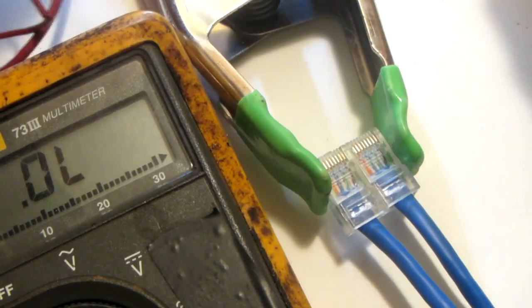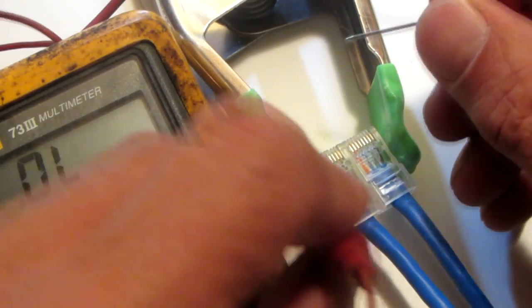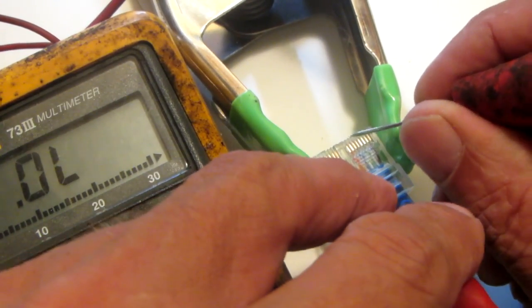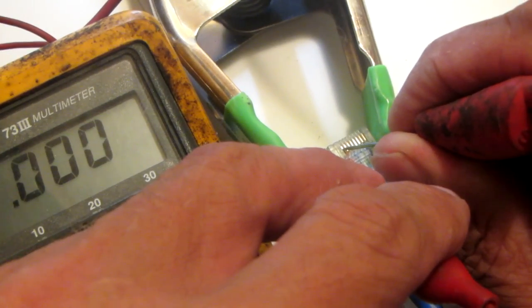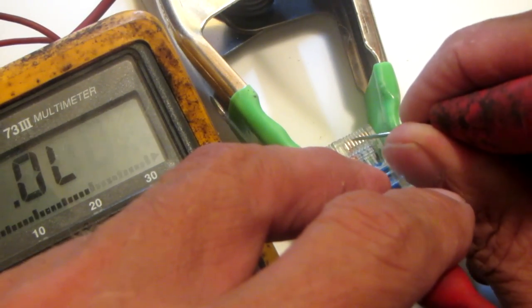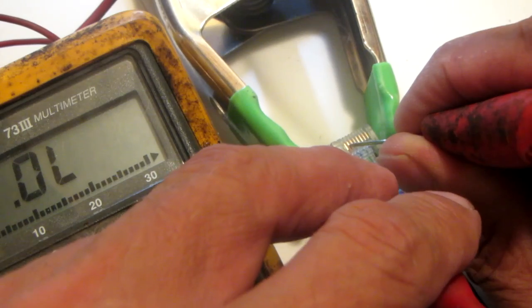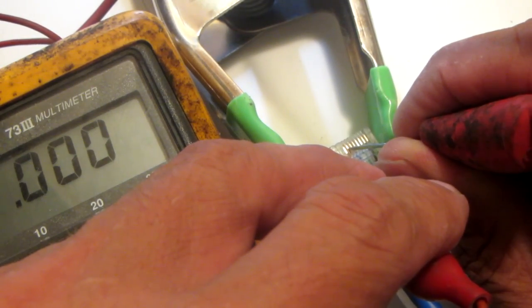While I'm testing it with the meter, I'm going to put the meter in diode checker mode because it beeps whenever you have continuity. Now, this is the typical ethernet cable - they call it a T568B (B is in Bravo) cable.